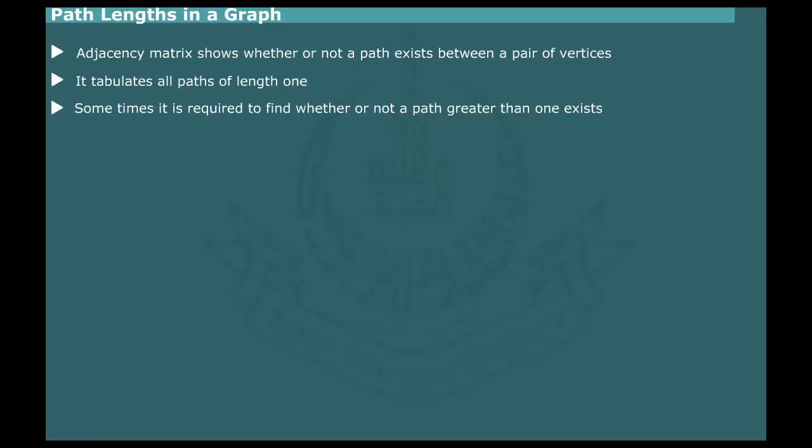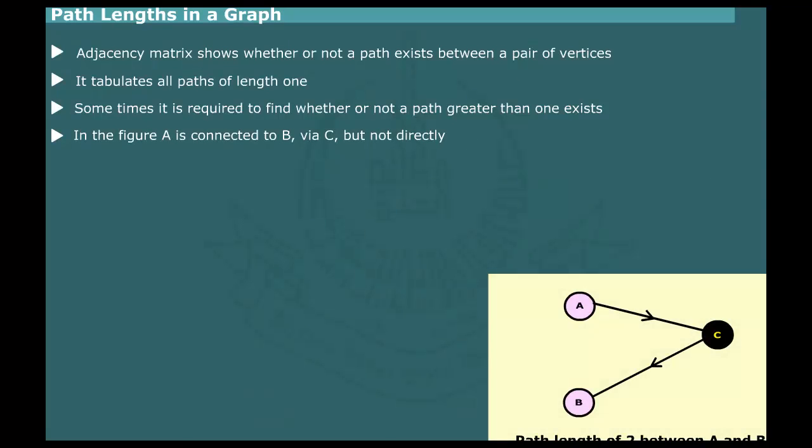Consider, for example, a simple graph shown in this figure. Note that vertices A and B are connected to vertex C, but it is not directly connected to B. Therefore, although there is no path of length 1 between A and B, there is also another path of length 2 because B is reachable from A via C.